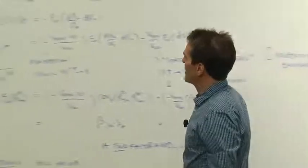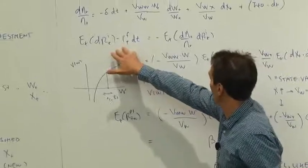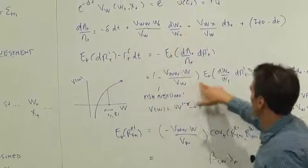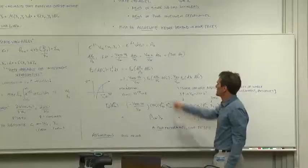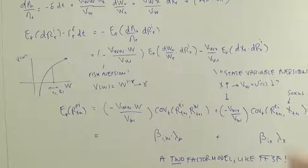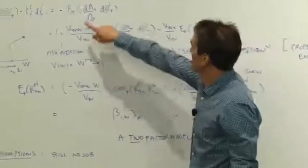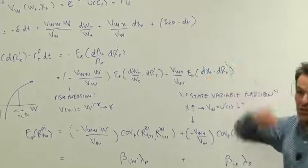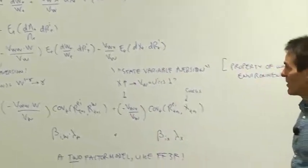We get that expected excess returns equals the first term, this VWW term times the covariance of returns with the growth and wealth, and we get a second term, the VWX term times the covariance of return with the change in the state variable.